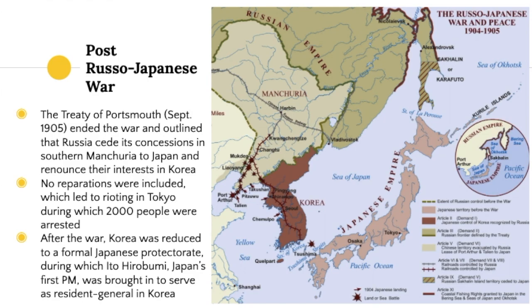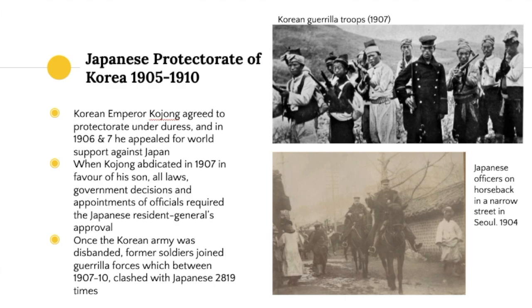After the war, Korea was reduced to a formal Japanese protectorate, during which Ito Hirobumi — Japan's first prime minister — was brought to serve as Resident General in Korea. Korea still had its own king, but its political organization was controlled by the Japanese. The protectorate period lasted from 1905 to 1910, with Emperor Kojong agreeing to protection under duress.